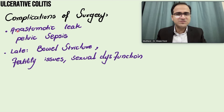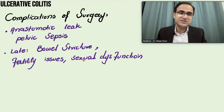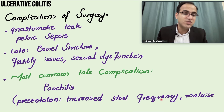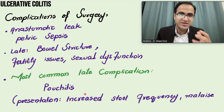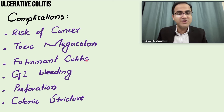The most common immediate complication of surgery is anastomosis leakage and pelvic sepsis. Late complications include bowel stricture, fertility issues, and sexual dysfunction if nerves are damaged. The most common late complication is pouchitis — inflammation of the ileal pouch — presenting with increased stool frequency and malaise. Complications of ulcerative colitis overall include colon cancer risk, toxic megacolon, fulminant colitis, GI bleeding, perforation, and colonic stricture.